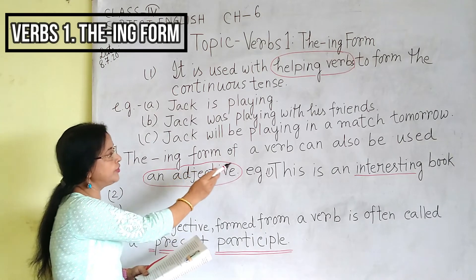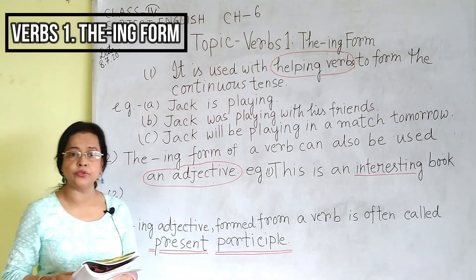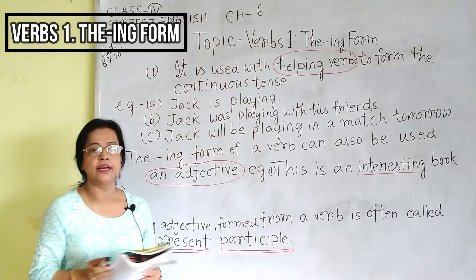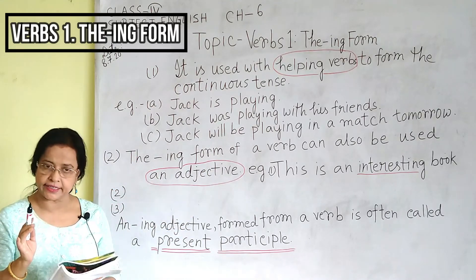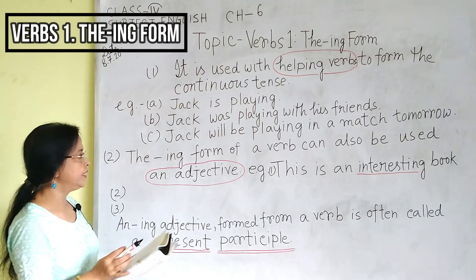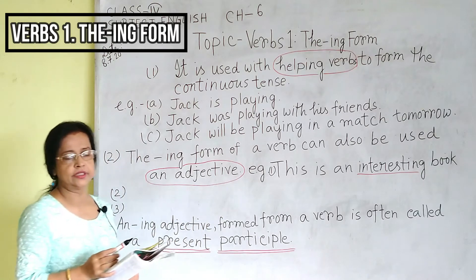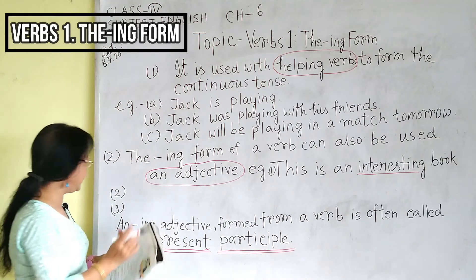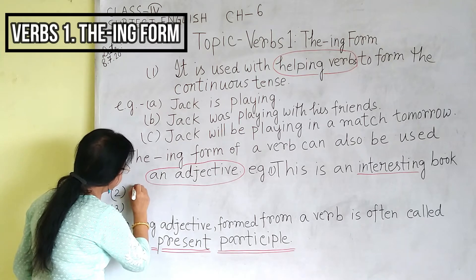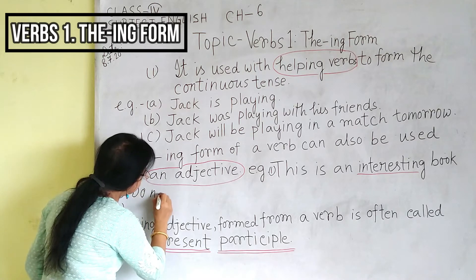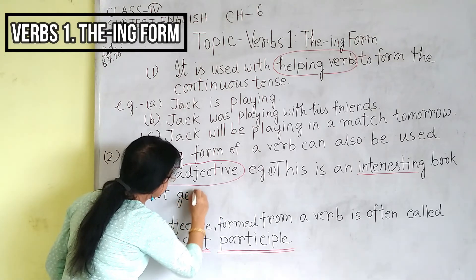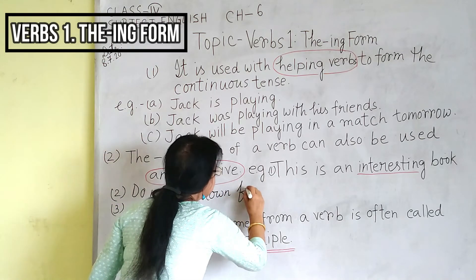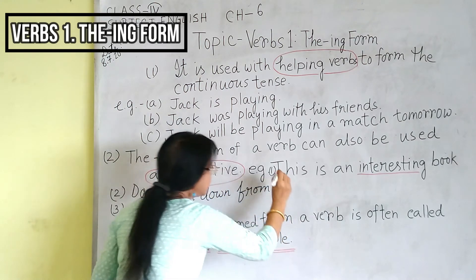The ING form of a verb can also be used as an adjective. For example: 'This is an interesting book' — here 'interesting' is used as an adjective. Another example: 'Don't get down from a running bus' — here 'running' is used as an adjective.